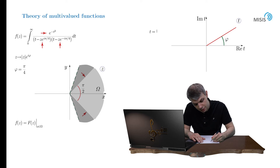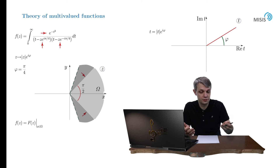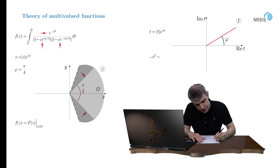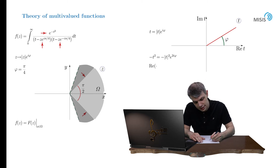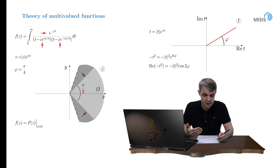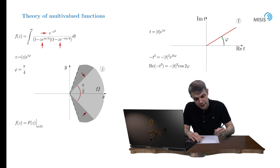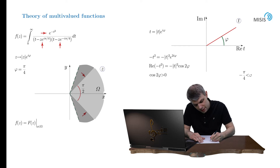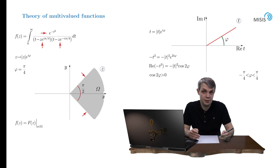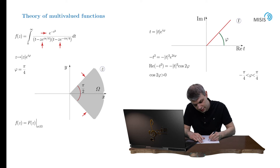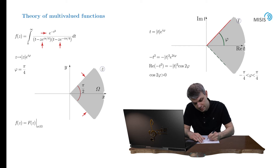We parameterize t as |t| times e to i·phi, where phi is the angle of rotation. Checking what happens with the exponent: minus t squared becomes minus |t|² times e to 2i·phi. The convergence is dictated by the real part, which is minus |t|² times cosine(2·phi). For convergence we need cosine(2·phi) to be positive, which locks phi between minus pi/4 and pi/4. So the region of convergence in the complex t-plane is a corner shape with span pi/2.